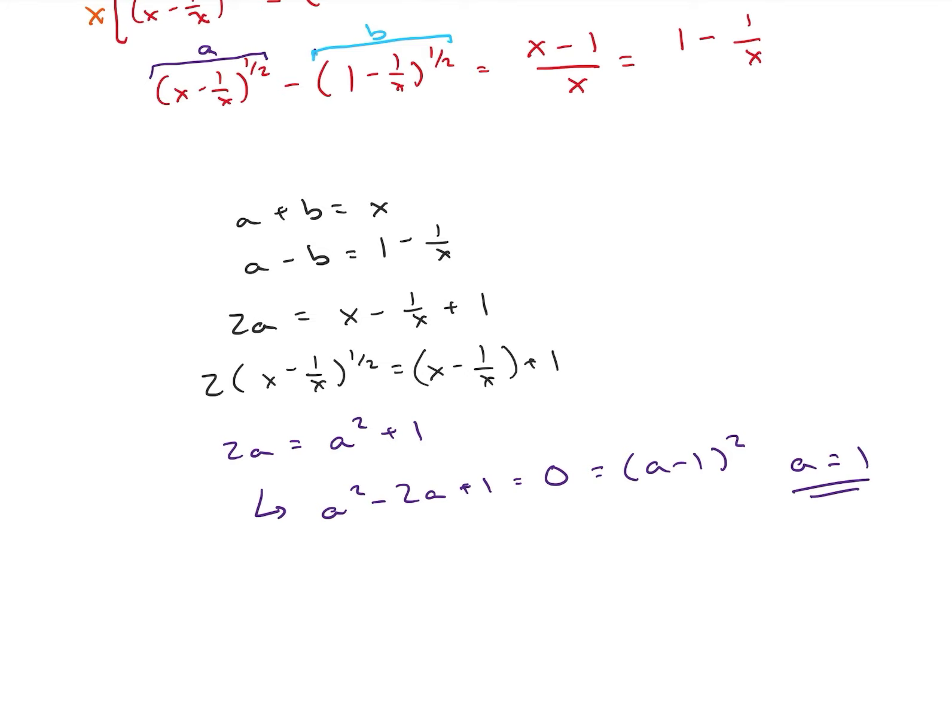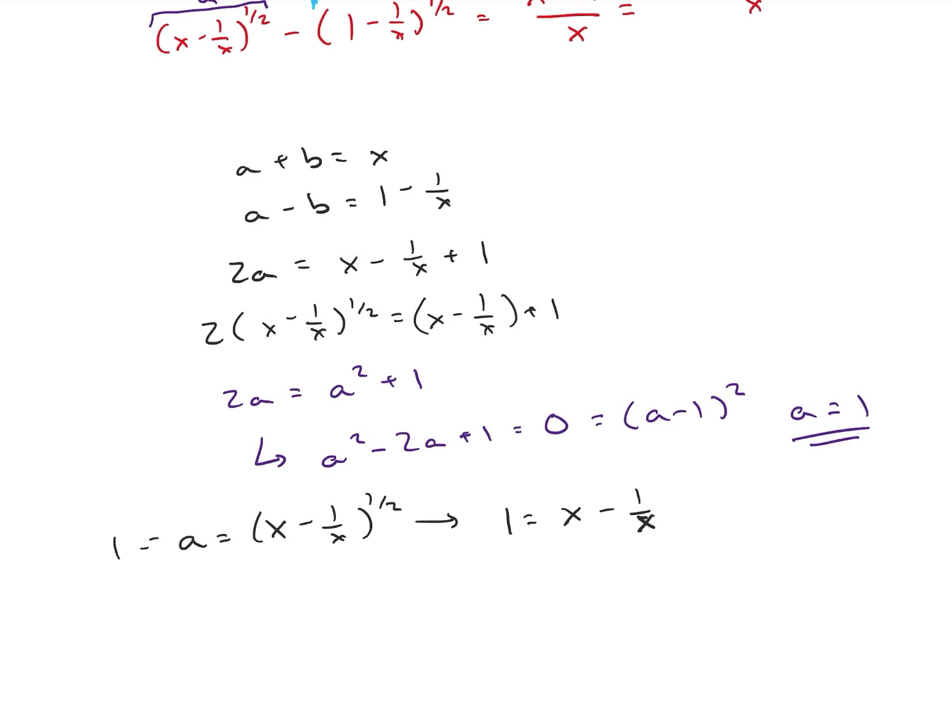And a was x minus 1 over x. So, if I square both sides of my equation, and a was equal to 1, I'm going to get 1 is equal to x minus 1 over x. And we have to be a little bit careful. We'll see in a minute because we just squared those expressions. So, if I multiply x through on both sides, I'm going to get x is equal to x squared minus 1. Or x squared minus x minus 1 is equal to 0.